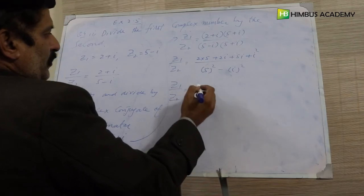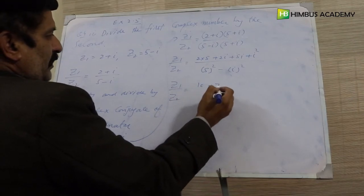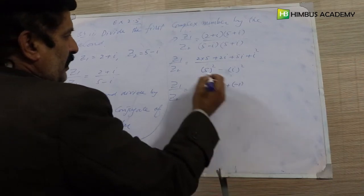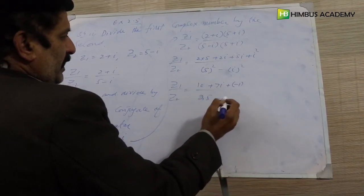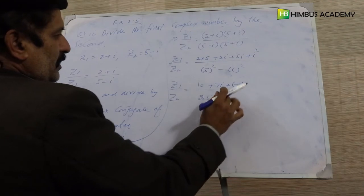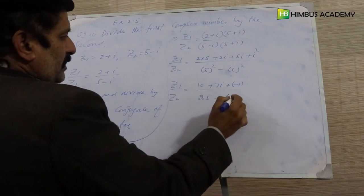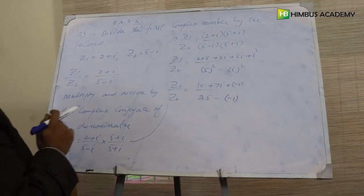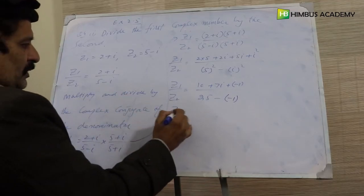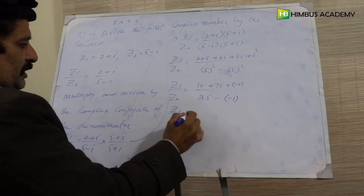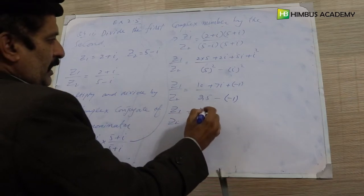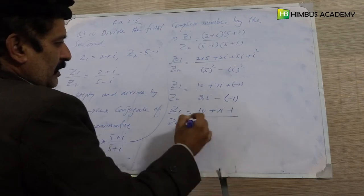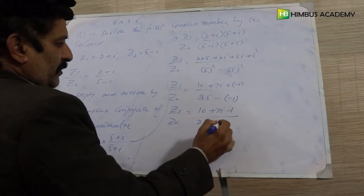Two fives are ten, plus seven iota, plus iota square (which is minus one), divided by twenty-five minus iota square (which is minus one). So z1 over z2 equals ten plus seven iota minus one, over twenty-five plus one.